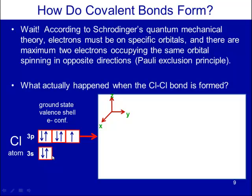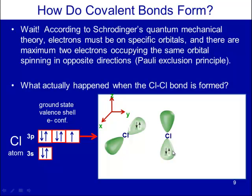Looking at the 3p orbitals: one oriented along the x-axis has a pair of valence electrons spinning in opposite directions; one along the z-axis also has a pair. But the one oriented along the y-axis has a single valence electron — and this is the one that is able to bond with the other chlorine atom.